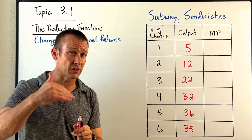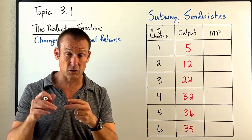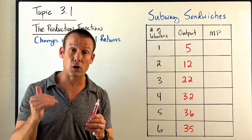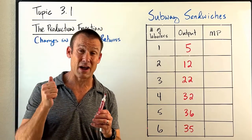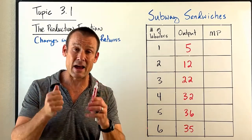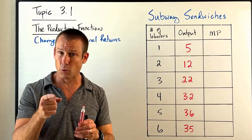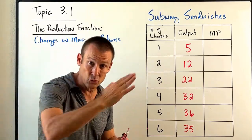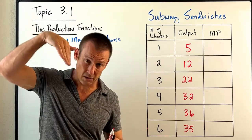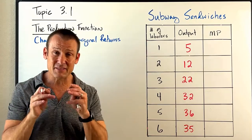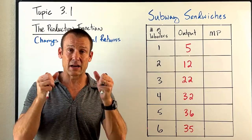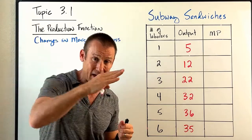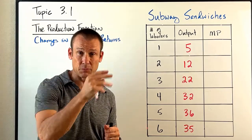When you start studying the theory of the firm, you're going to start drawing all these graphs. These graphs are going to have curves like the marginal cost curve, average total cost curve, and average variable cost curve. Spoiler alert — the curve shape is going to be this U-shape. This is the video for you to gain strong foundational knowledge about why that curve is U-shaped.